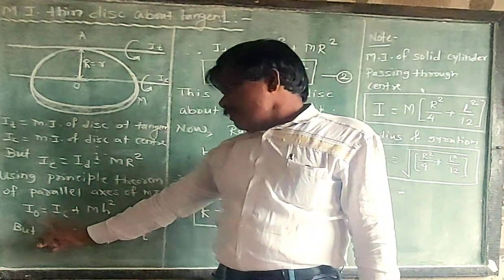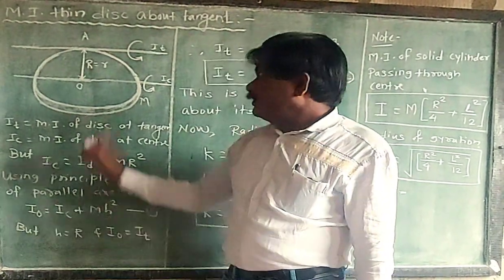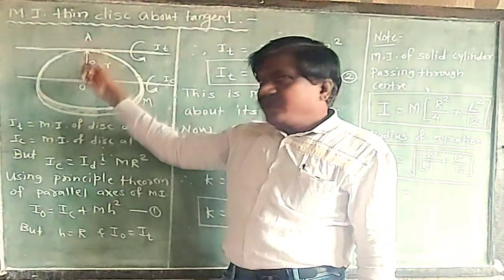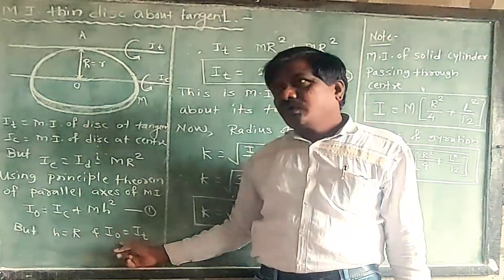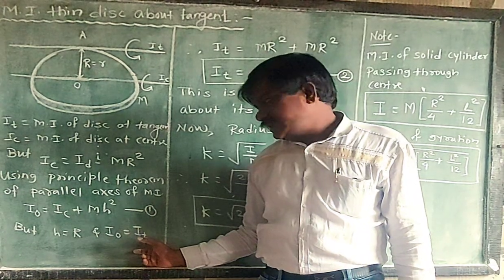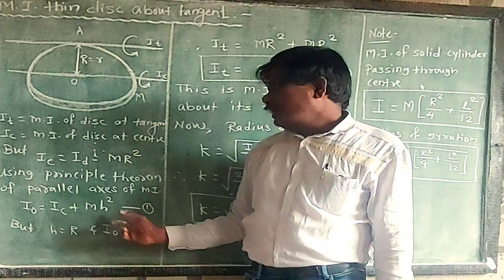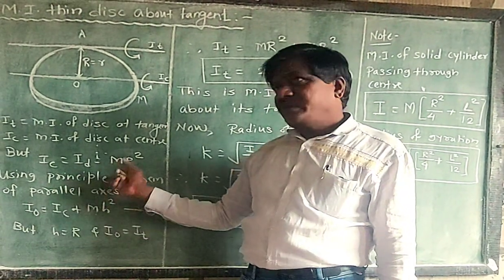Now here, H value is what? R. The distance between two parallel axes. H is equal to R. And I_O, it is a tangent, so I_T. I_O's value is I_T. And I_C's value is 1/2 MR square.